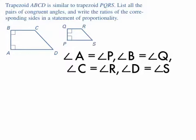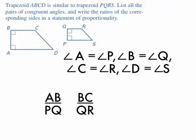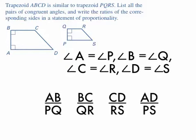They should use the congruent symbol, not equal. The next thing is to write ratios of corresponding sides in a statement of proportionality. I'm going to put ABCD on top and PQRS on the bottom. Corresponding side to AB is PQ; BC corresponds to QR; CD corresponds to RS; and AD corresponds to PS. A statement of proportionality means all these ratios are equal: AB/PQ = BC/QR = CD/RS = AD/PS.